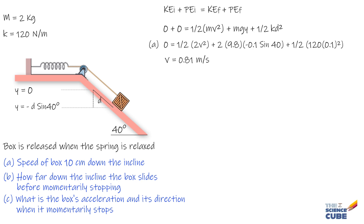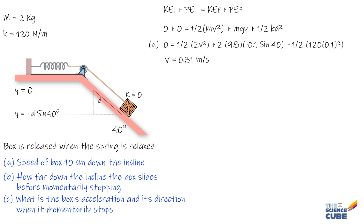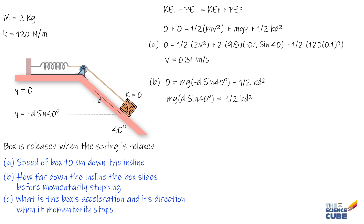For part B, we look for a value of d (not equal to 0) such that kinetic energy is 0. Using the same energy conservation equation for the point where the spring is stretched to the fullest and the box comes to a stop: 0 = mg(−d sin 40°) + ½kd². This simplifies to mgd sin 40° = ½kd², or 2(9.8)(sin 40°) = ½(120)d. Solving for d gives d = 0.21 meters.